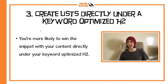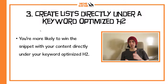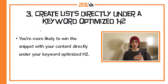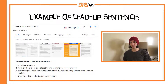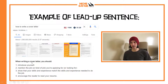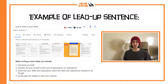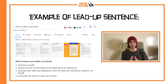Tip three: create lists directly under a keyword-optimized H2. In my experience, you're more likely to win the snippet when your content is directly underneath a keyword-optimized heading. For example, for 'how to write a cover letter,' Google has bolded key phrases because they selected that list — and straight above that list is the phrase 'when writing a cover letter, you should...' followed by the list. So you could use an H2 header like 'How to Write a Cover Letter in Five Simple Steps,' then jump straight into the list, giving Google signals that this is where it should take the snippet from.